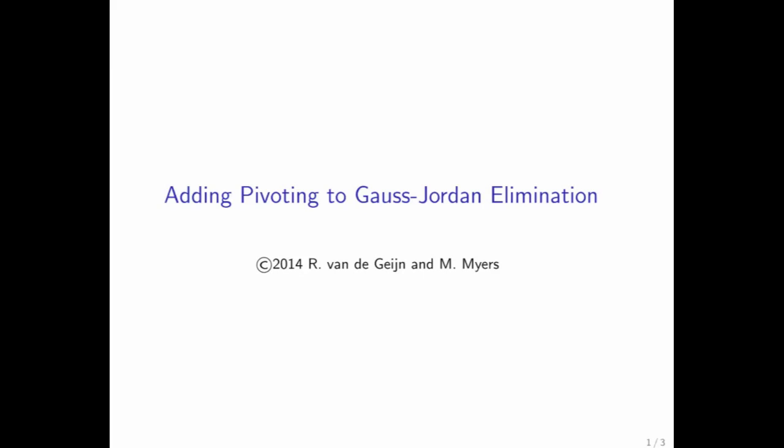The astute participant will have noticed that Gauss-Jordan elimination can run into the same problem that Gaussian elimination runs into, which is that you end up dividing by a zero.